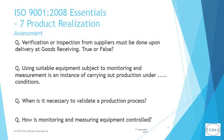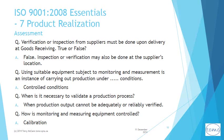Take time to do a self-assessment. Verification or inspection of goods from suppliers must be done upon delivery at goods receiving — true or false? Using suitable equipment subject to monitoring and measurement is an instance of carrying out production under what conditions? When is it necessary to validate a production process? How is monitoring and measuring equipment controlled? Pause the presentation here and answer all the assessment questions, then proceed to the next slide to check your answers.